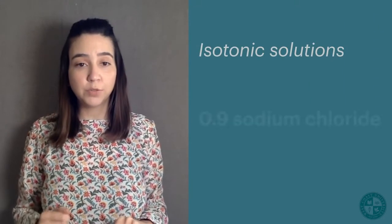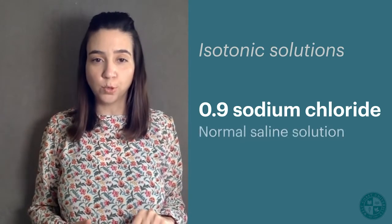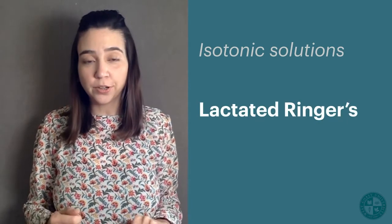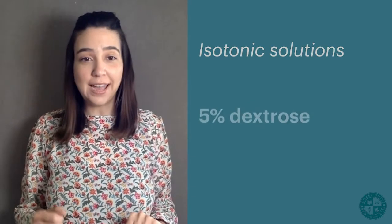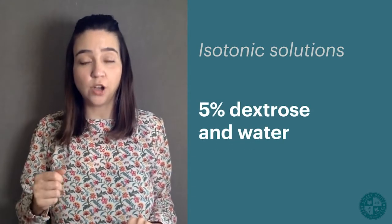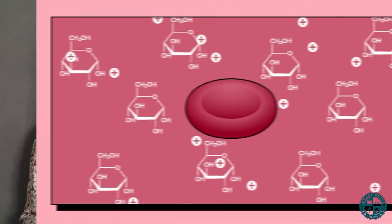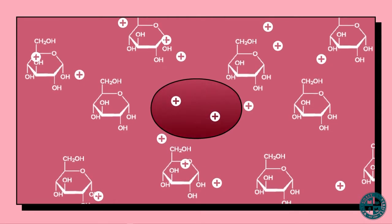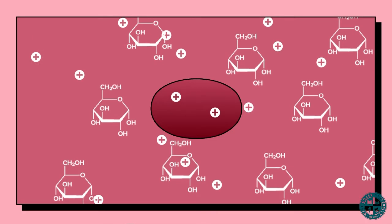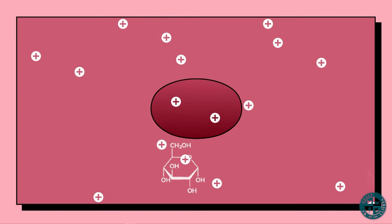Some examples of isotonic solutions include 0.9% sodium chloride, also called normal saline solution; Lactated Ringer's, also called LR; and 5% dextrose in water, also called D5W. However, please take special consideration with D5W — this fluid is initially a hypotonic fluid, but once the dextrose is absorbed, the remaining saline and electrolytes will act as an isotonic solution.